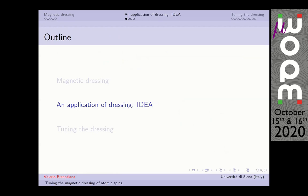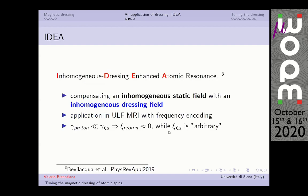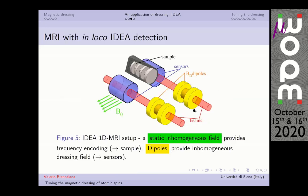What to do with this kind of dynamics? I will show you shortly an application of this dressing phenomenon. We call it IDEA, which is Inhomogeneous Dressing Enabled Atomic Resonance. The idea is to compensate an inhomogeneous static field with an inhomogeneous dressing field. The motivation is to apply ultra-low field MRI experiments with frequency encoding. Notice that the gyromagnetic factor of protons is much smaller than cesium, so the dressing does not affect proton dynamics. Only the atomic magnetometer feels this dressing field because ξ is almost zero for nuclei.